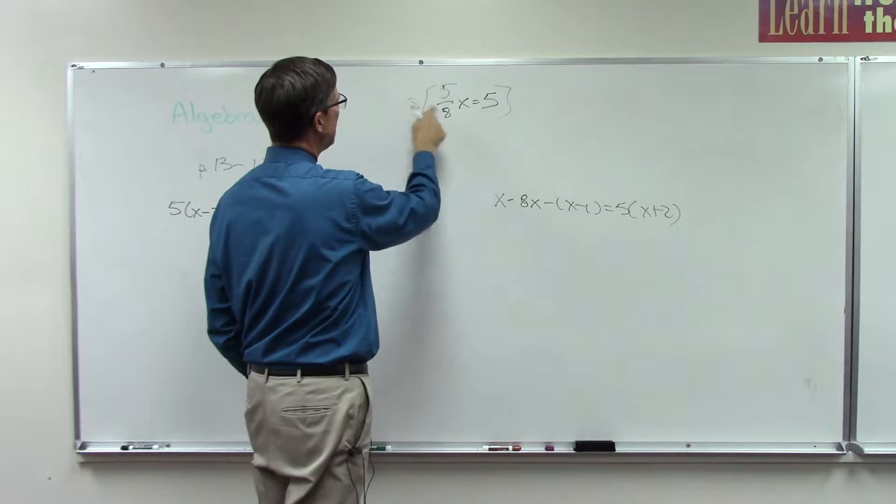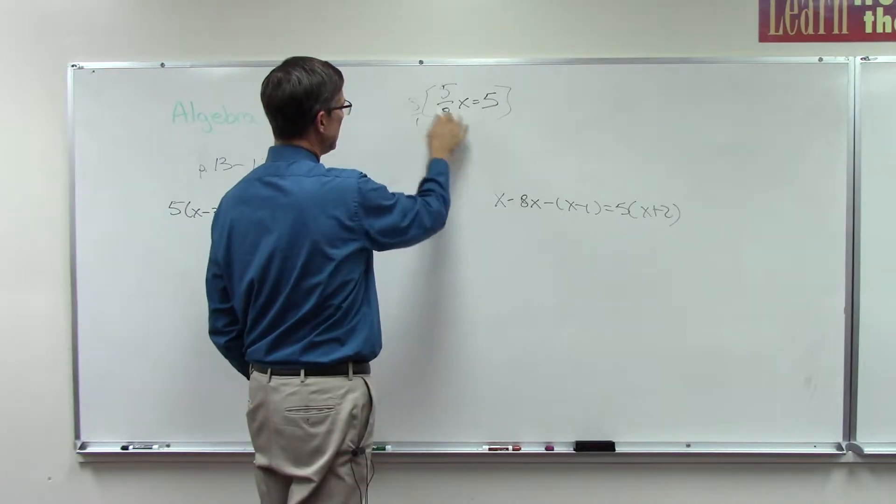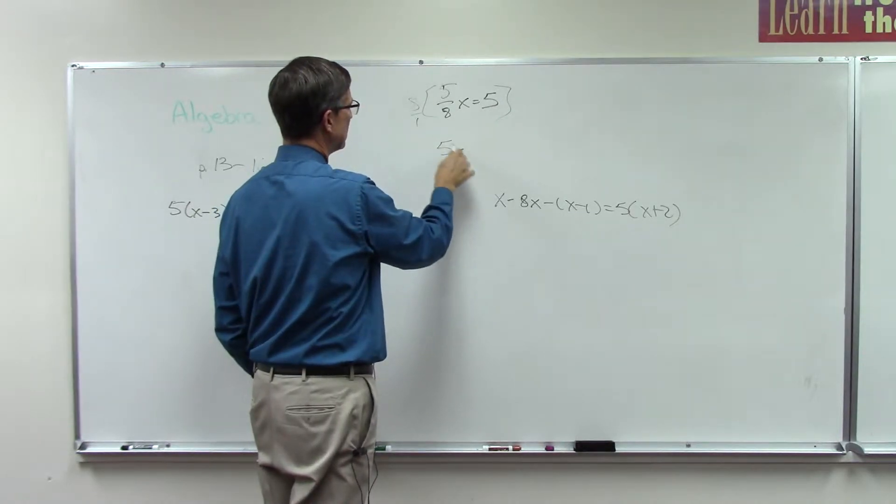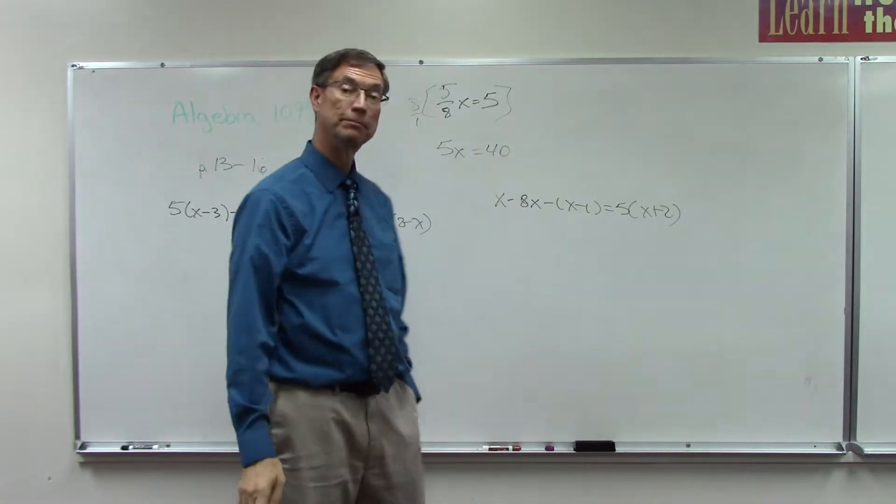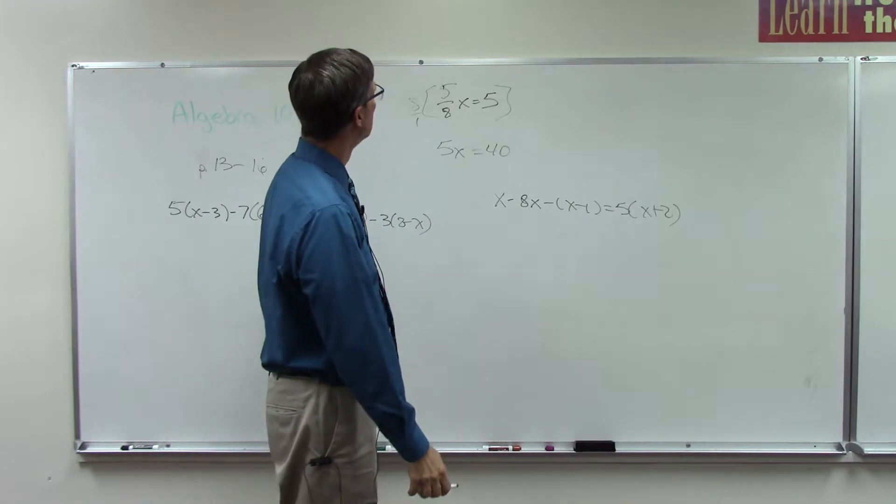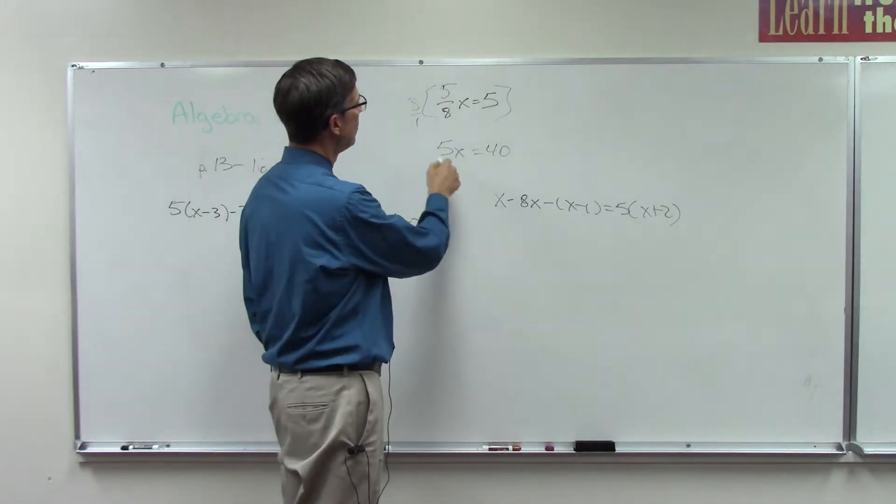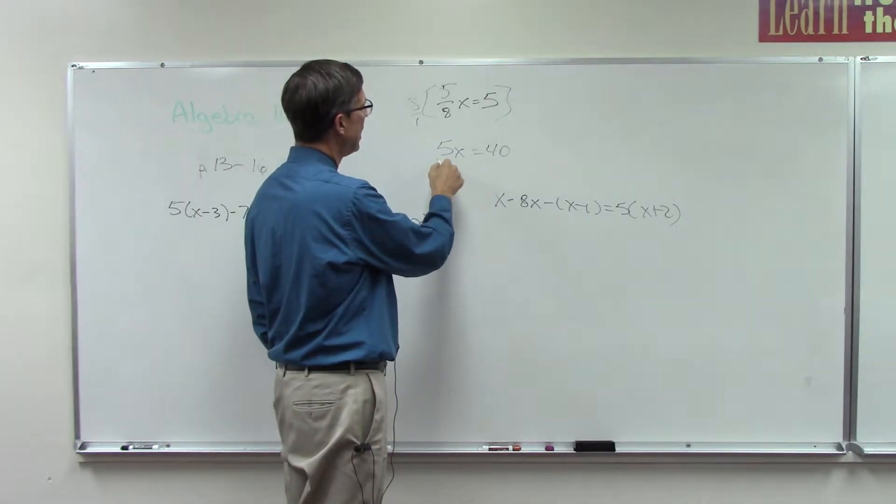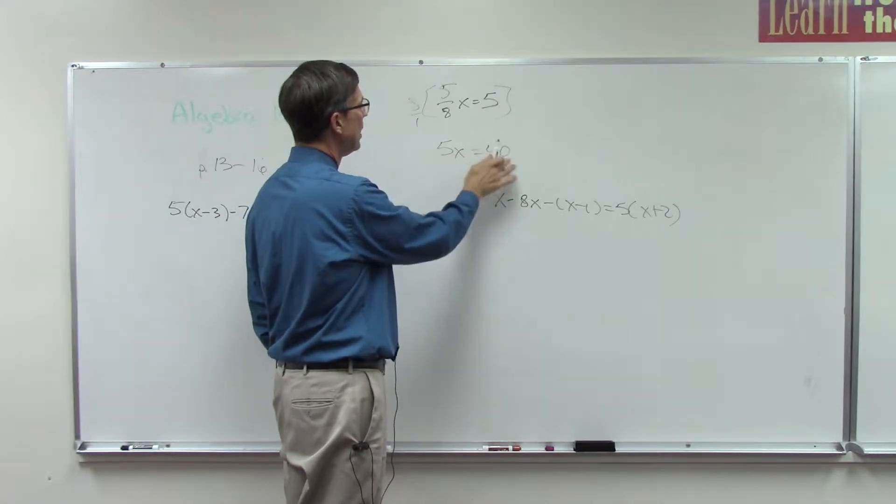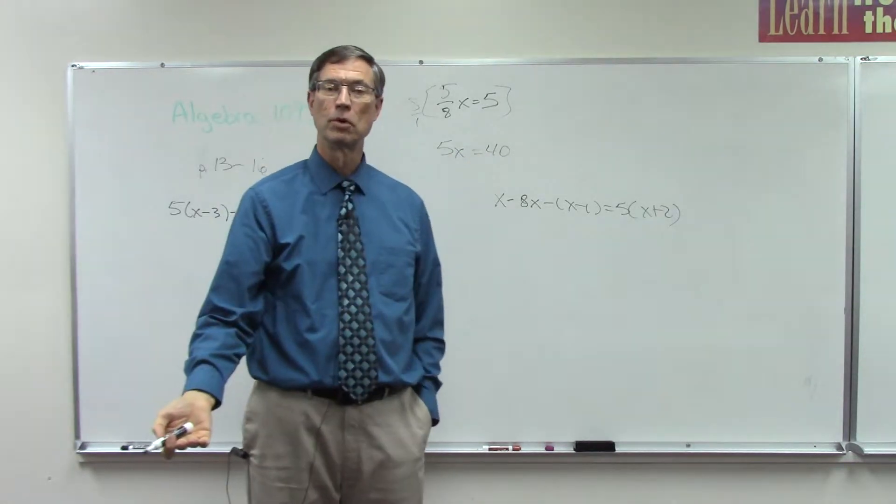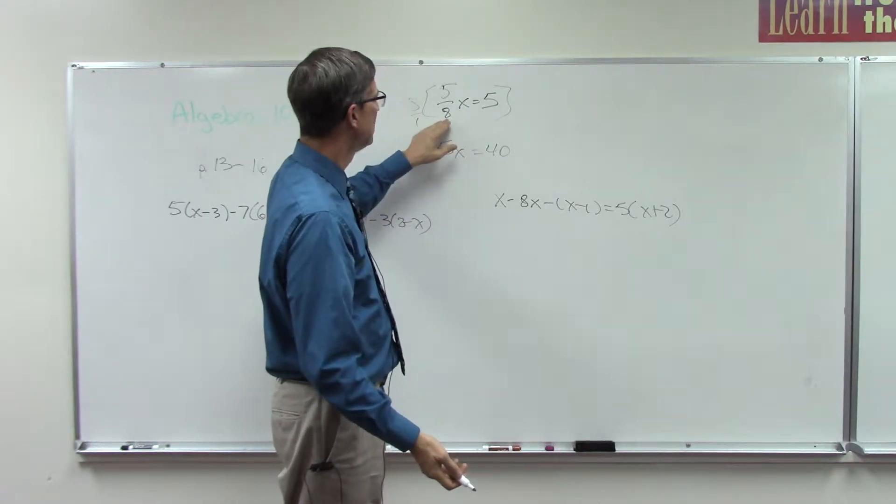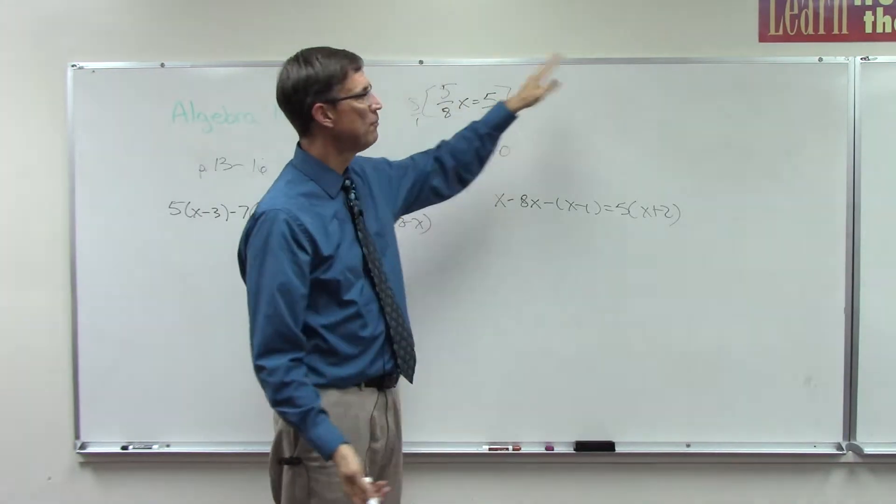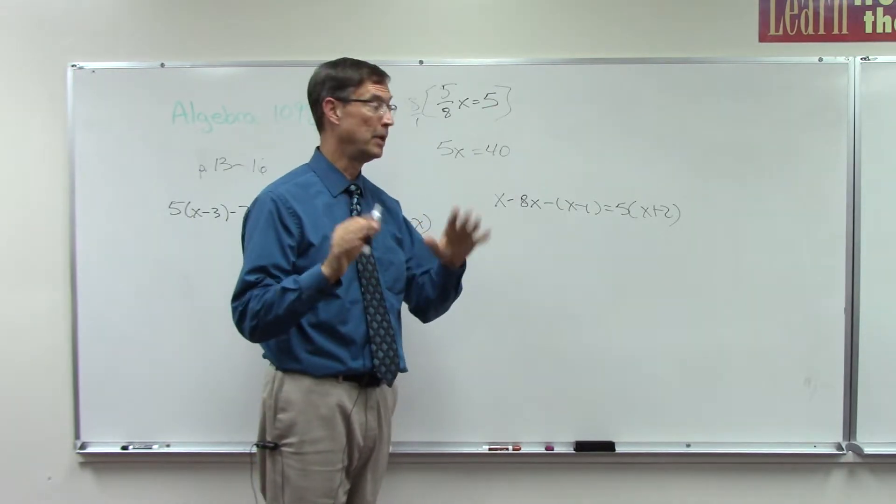So when I multiply 8 times this, the 8 cancels against the 8, and I get 5x. Now, what's 8 times 5? 40. So now the final answer is, I divide both sides by the 5, and you'll have the answer. So I'll let you finish that one, but the ticket, again, is you get the common denominator and multiply everything in the entire equation by that common denominator.